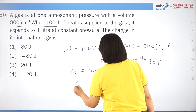Question 34: a system absorbs 1000 calories = 4180 J of heat and does 1675 J of external work. Change in internal energy ΔU = Q − W = 4180 − 1675 = 2505 J.